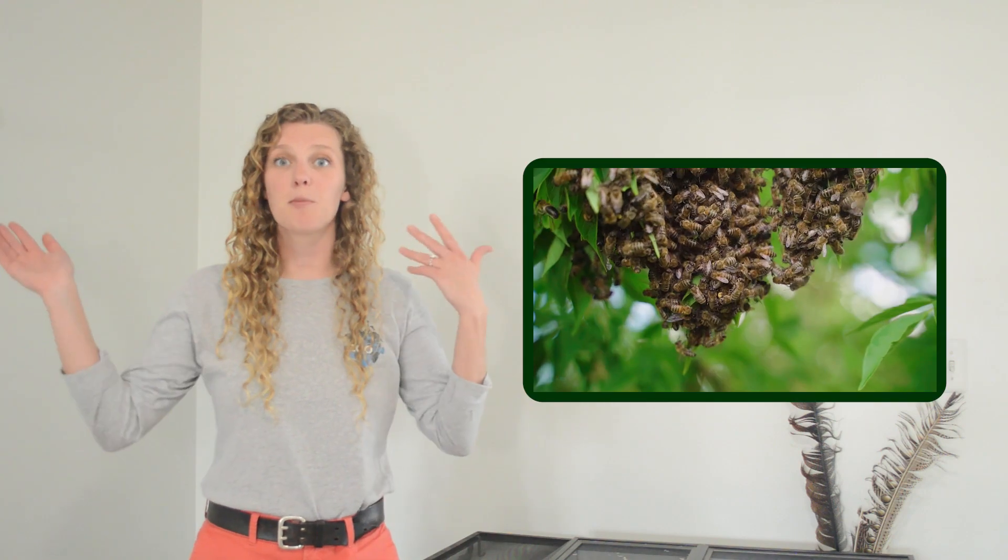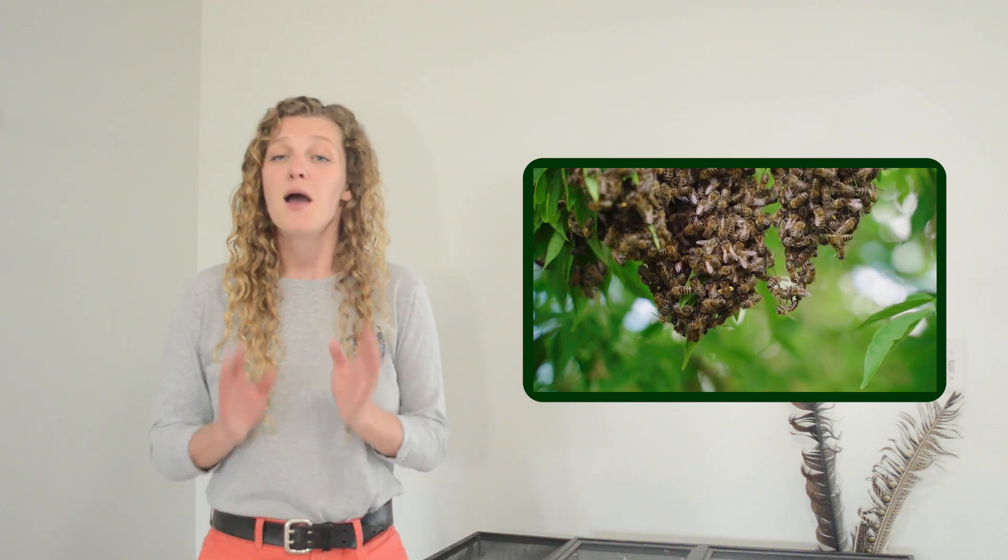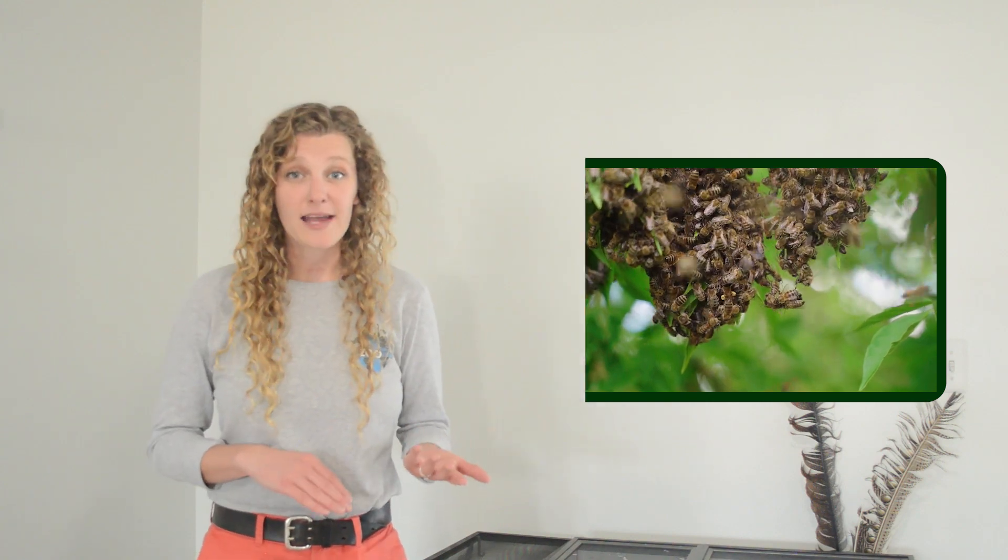When I picture bees, I typically picture them flying around and sometimes in really large groups, but not every bee has wings. There are some bees that cannot fly, and in fact, most bees don't live in social groups. More than 80 percent of bee species are solitary, which means they live alone.